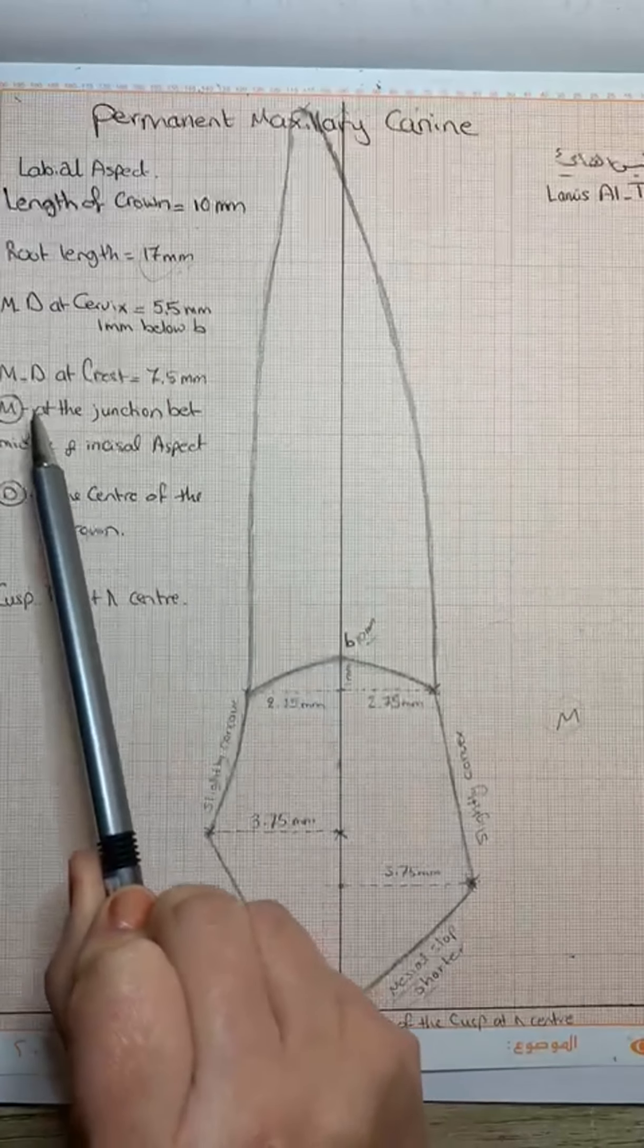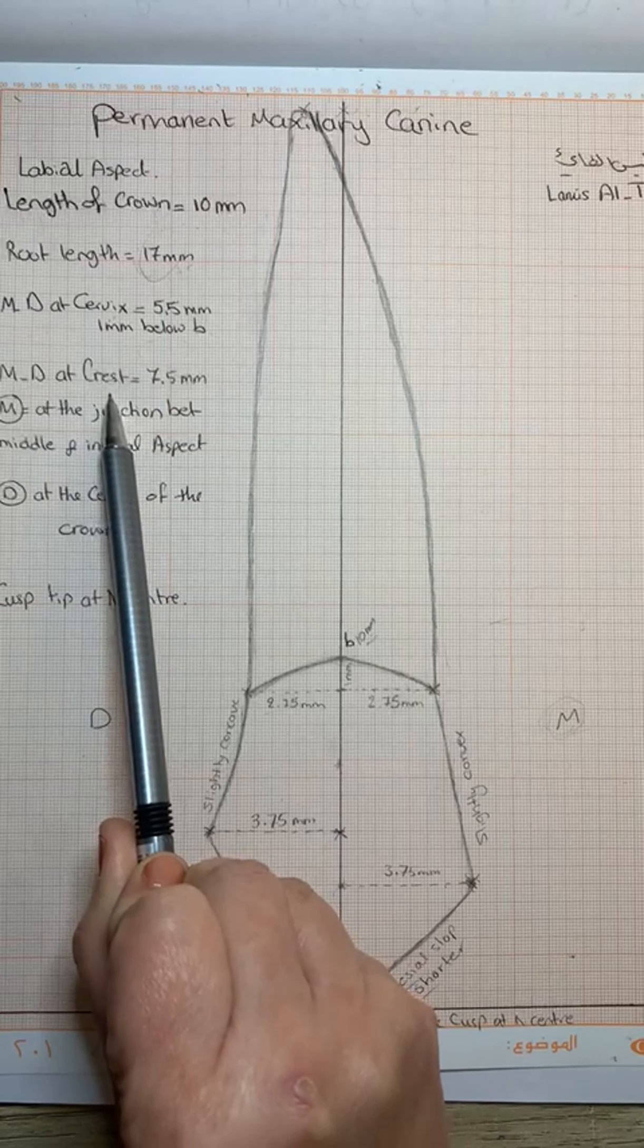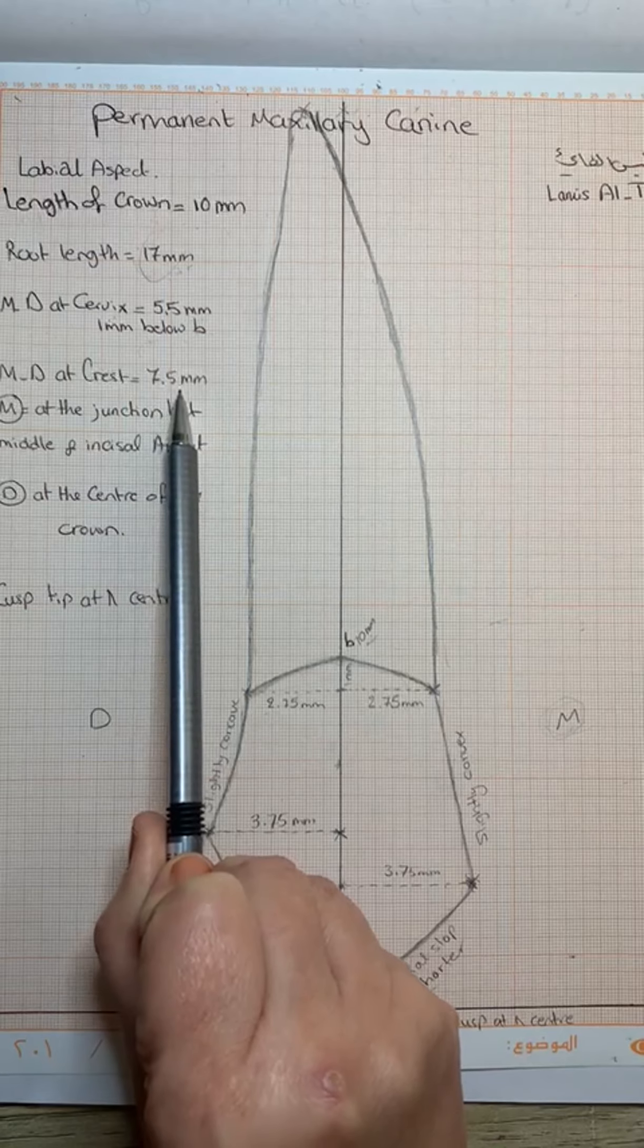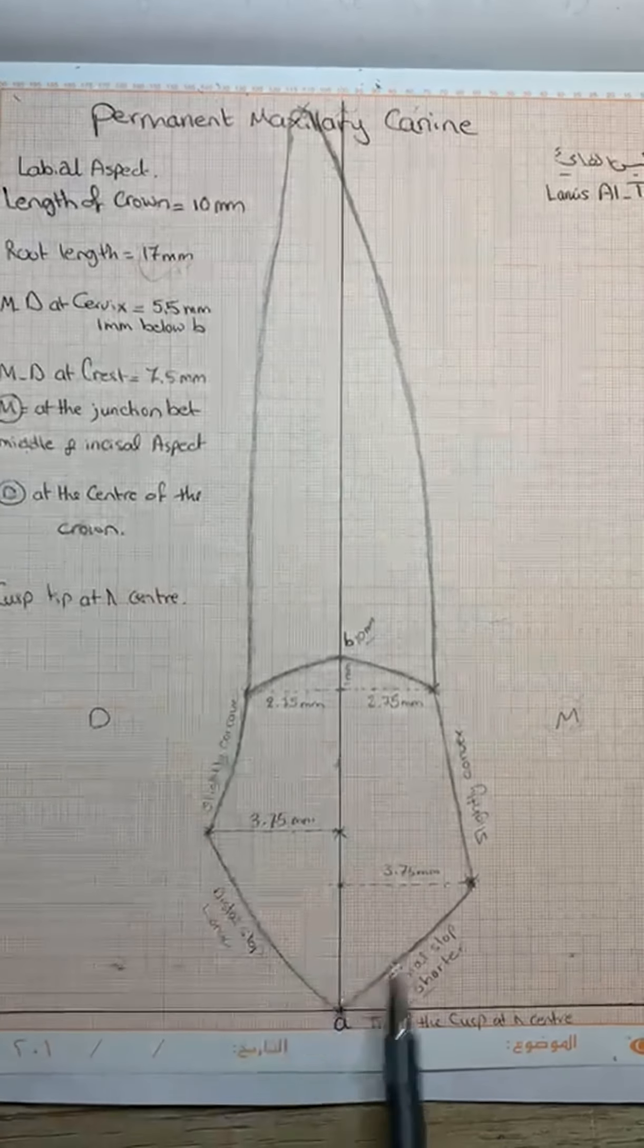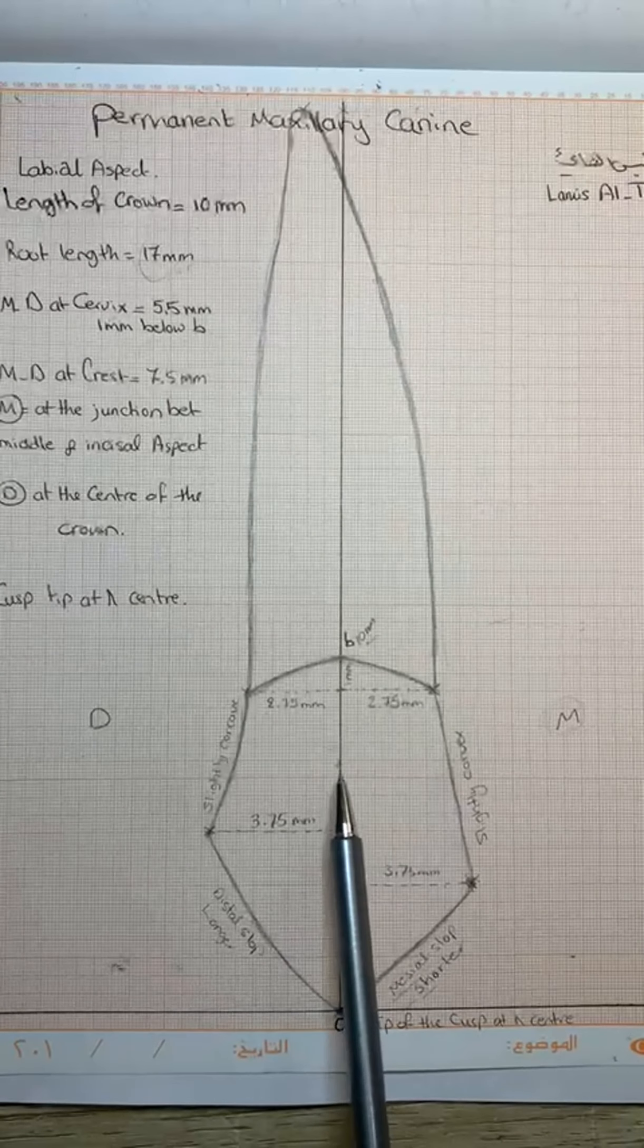The other measurement is the mesiodistal dimension at crest of curvature, or the contact area. The distance is 7.5 mm. The level, mesially, is at the junction between the incisal and middle third.